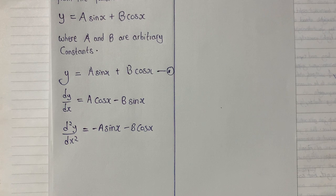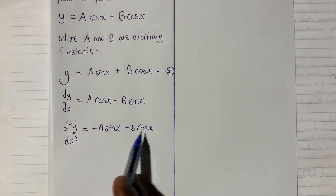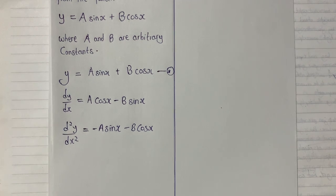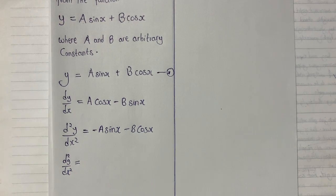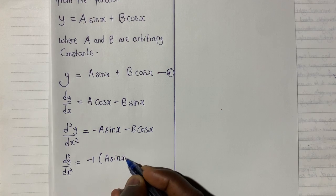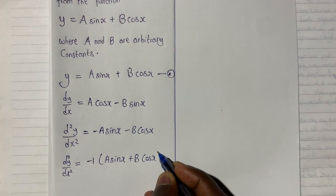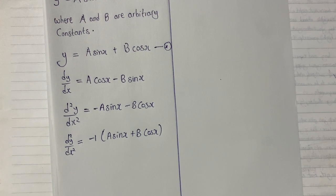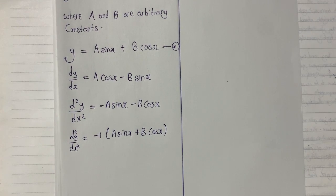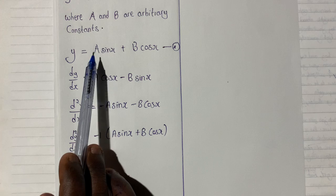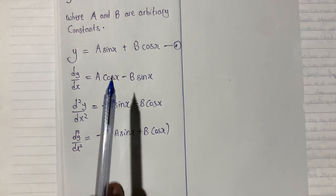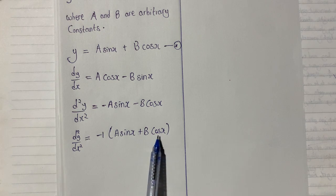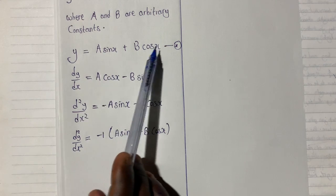The next thing is to look at this and manipulate it. I have a negative here and a negative here, so I can factorize negative one outside, giving d²y/dx² equals minus one times (a·sin(x) plus b·cos(x)). Now we can see that everything inside this bracket — a·sin(x) plus b·cos(x) — is the same expression as in equation star.